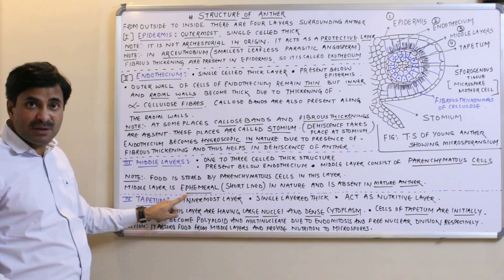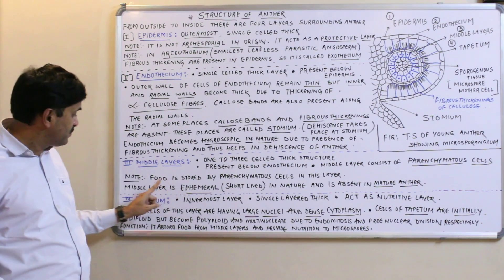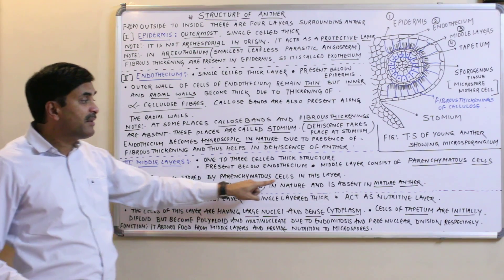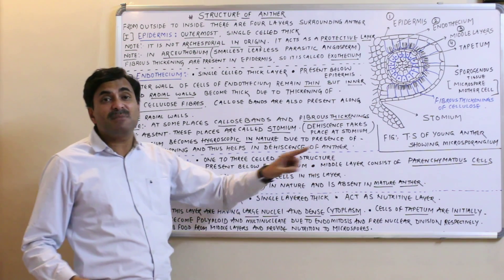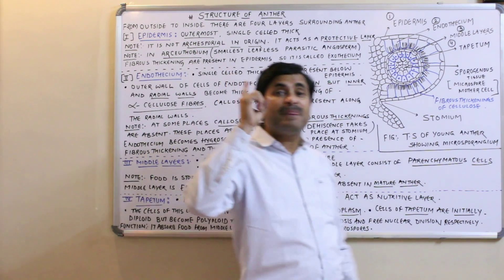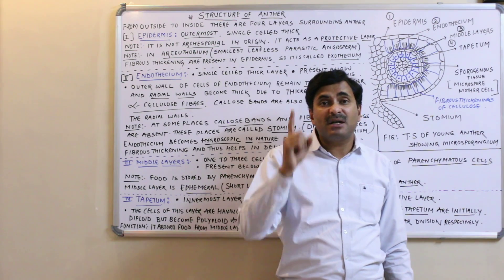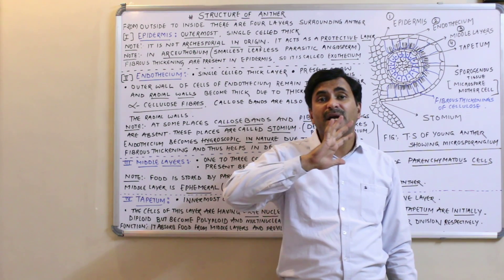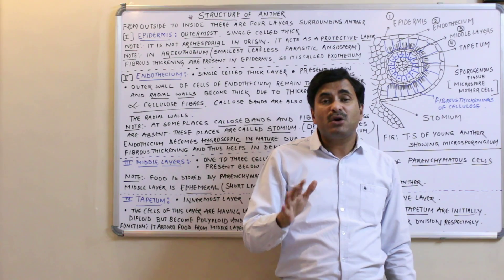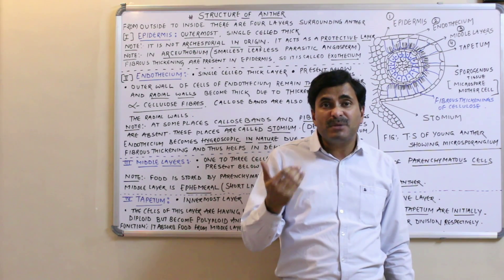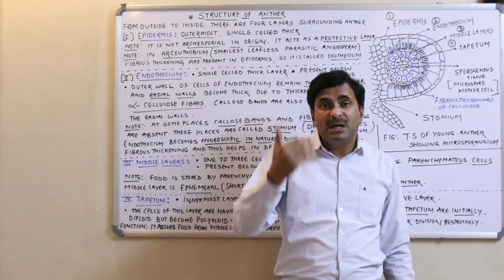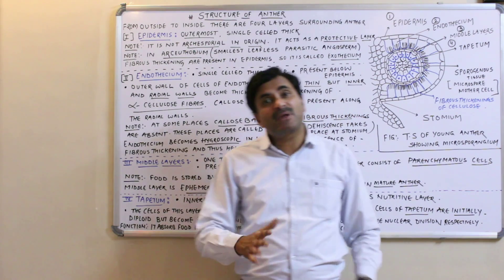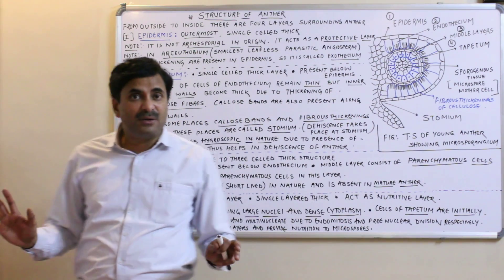The middle layer is ephemeral — meaning it is short-lived in nature and is absent in the mature anther. In a mature anther, the middle layer is always absent because at the time of maturity the middle layers provide food to the tapetum and later disintegrate.